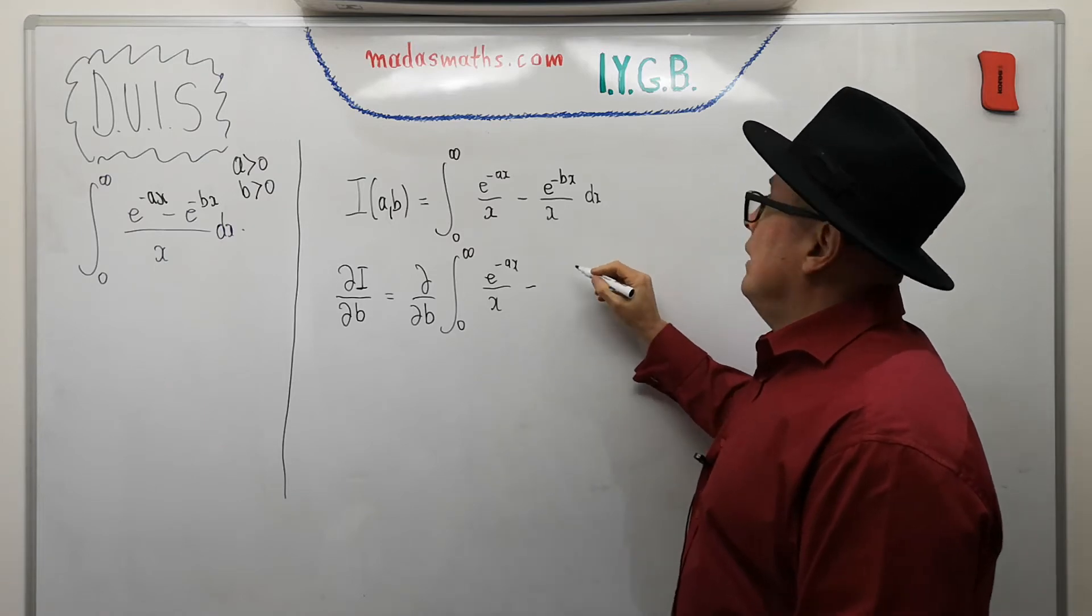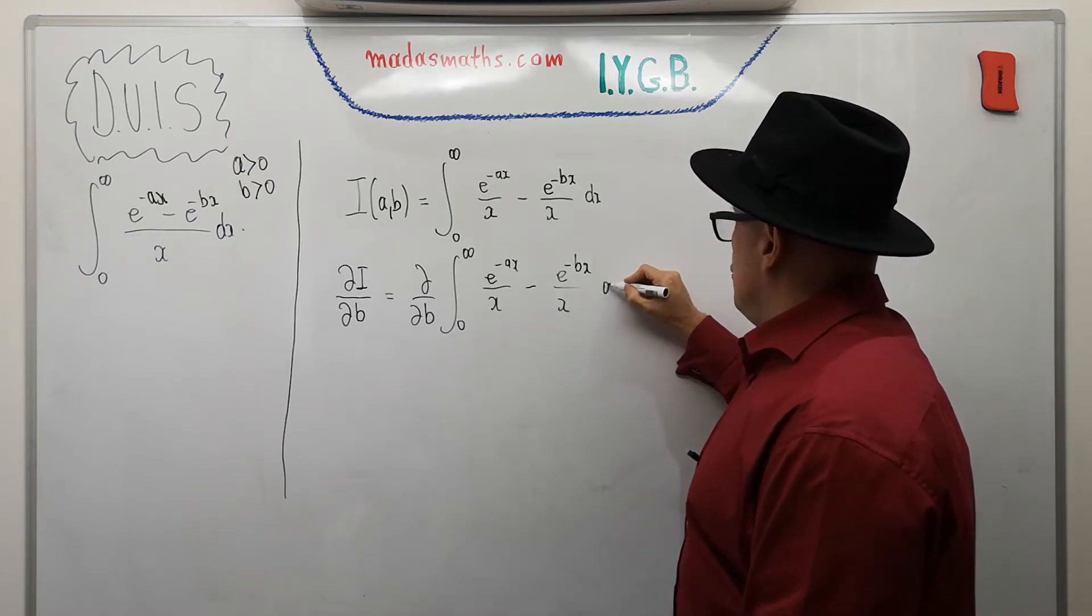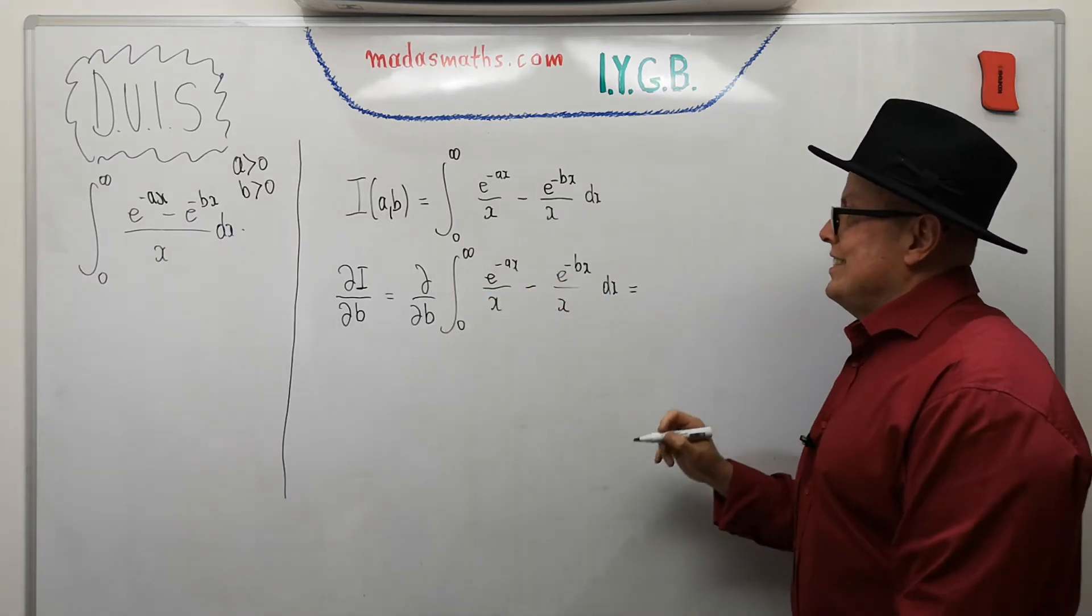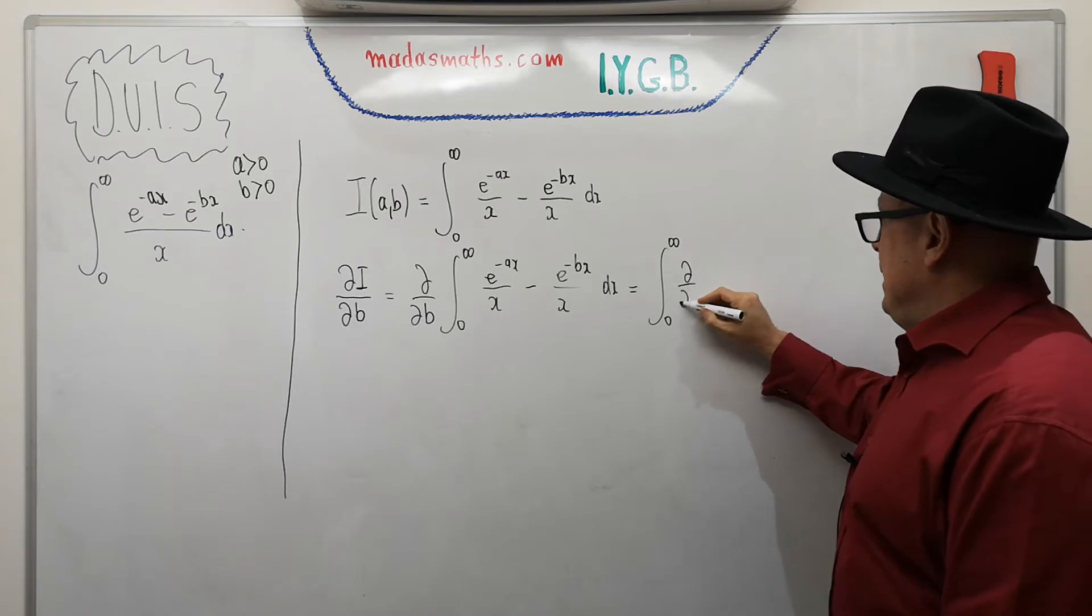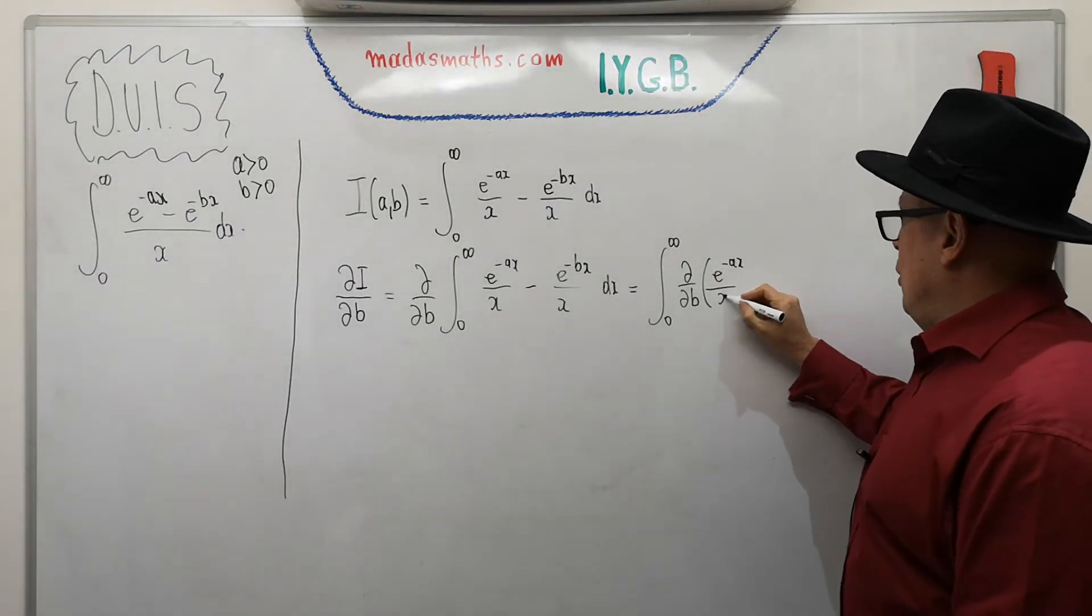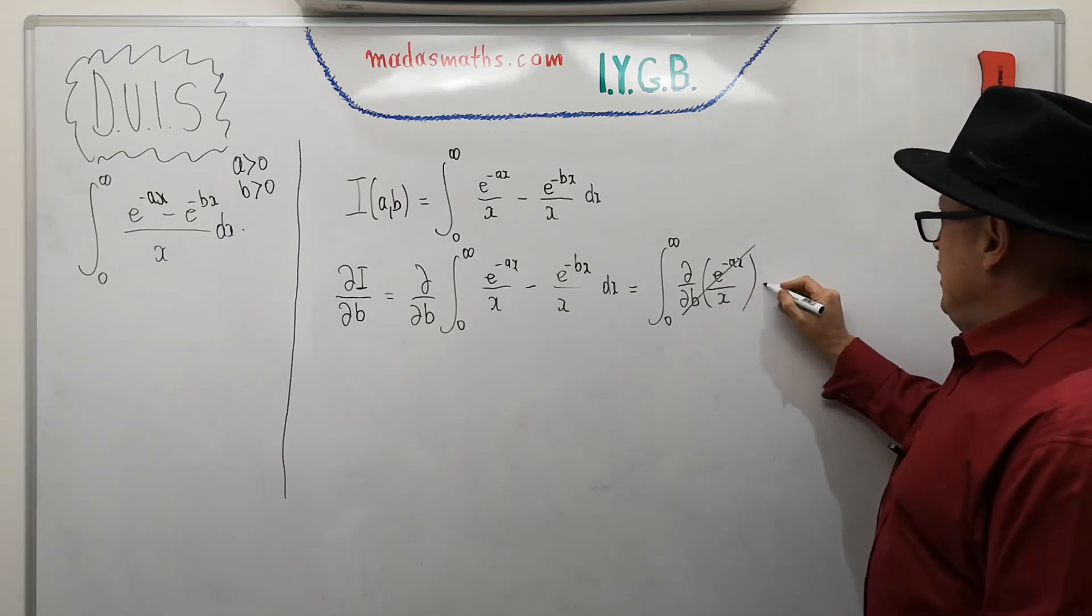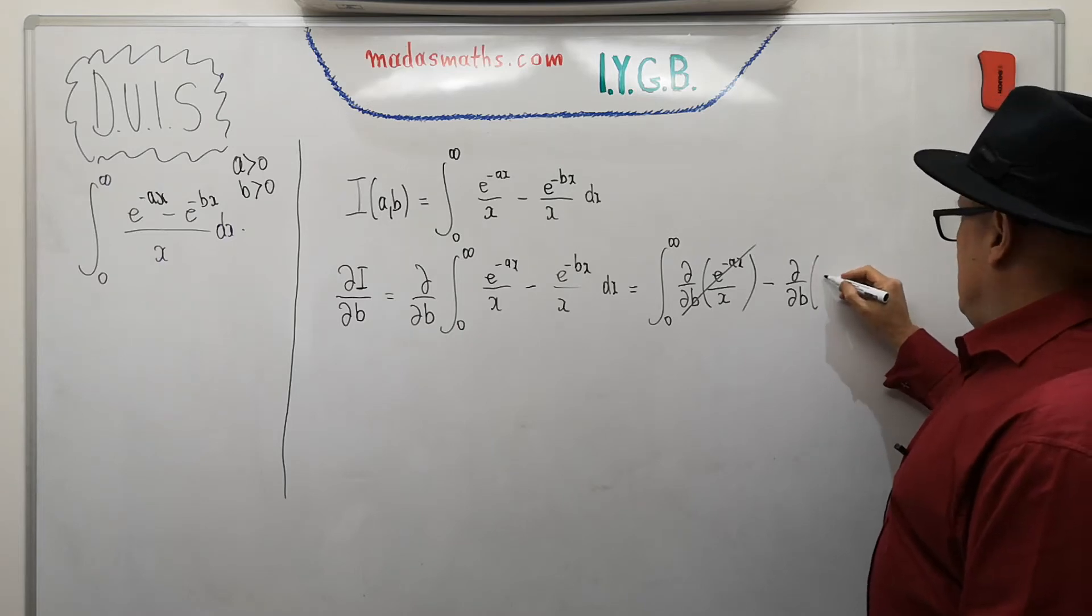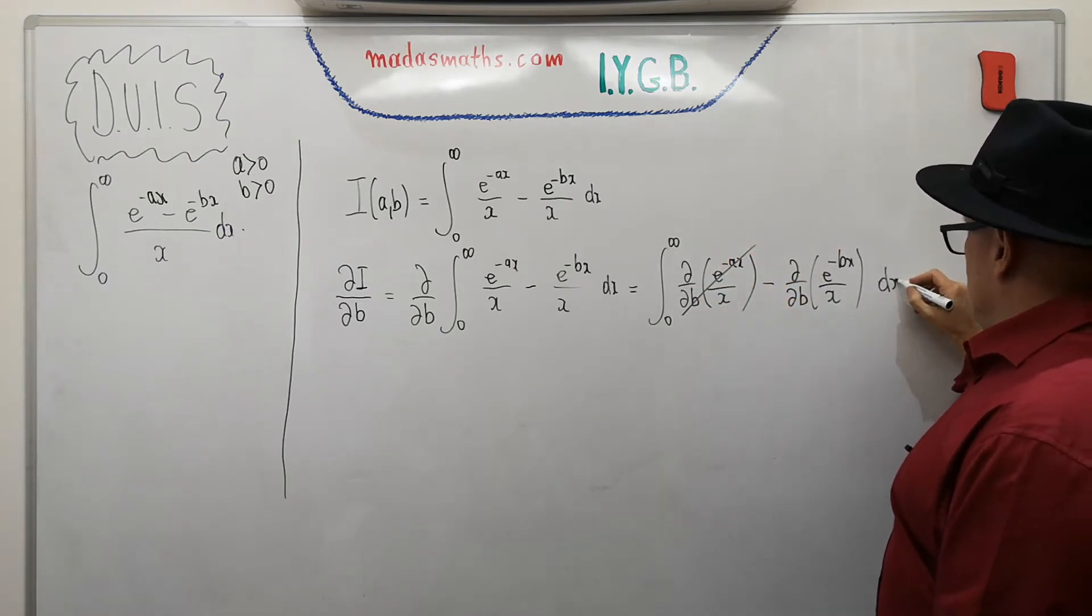And by Leibniz's integral rule, we have constant limits, we can actually swap the differentiation and the integration. So I need to write it again. This is now d by db. And the first part will be e to the minus ax over x, which will be zero because there's no b dependence in here. Minus d by db, and now we're having e to the minus bx over x. And the whole integral is with respect to x, dx.